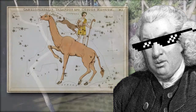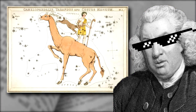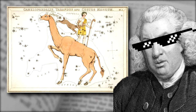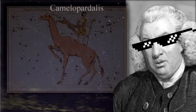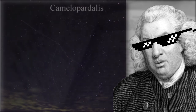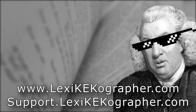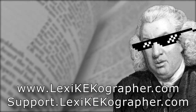Camelopard probably came into the English language not directly as a reference to the animal, but originally referring to the constellation Camelopardalis. This constellation can be seen between Ursa Major and Cassiopeia, just on the other side of the North Star from Ursa Minor.